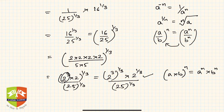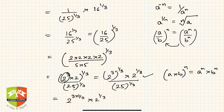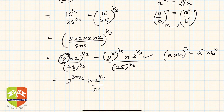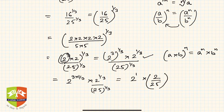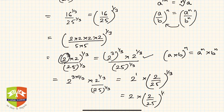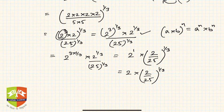So 2 to the power 3 times 1 by 3 becomes 2 to the power 1, times 2 to the power 1 by 3, divided by 25 to the power 1 by 3. This equals 2 times 2 upon 25 to the power 1 by 3, so the value is 2 into 2 by 25 to the power 1 by 3.